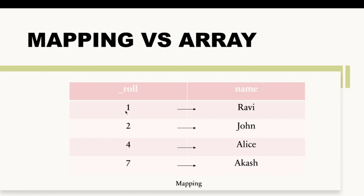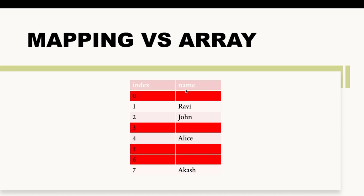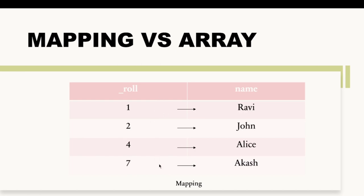In mapping, we are not storing roll numbers in a continuous fashion — we store at positions one, two, four, and seven, so there is no continuity. But in an array, everything is stored in a contiguous fashion, which is why we have so many empty slots that are getting wasted. Just to store four values, I have to create an array of size eight because the highest index is seven, and four of those slots are wasted.